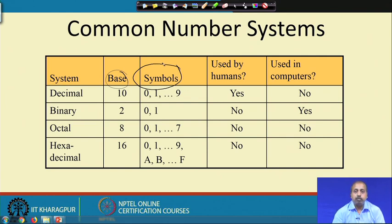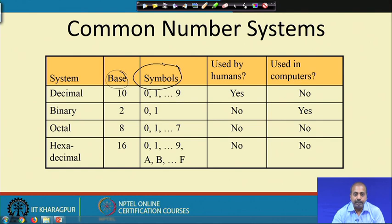A number system may consist of different numbers of digits. For example, in a decimal number system the base is 10, so there are 10 symbols conveniently represented as 0, 1, 2 up to 9. In a binary number system the base is 2, and in that case only 2 symbols are needed, which we represent as 0 and 1.